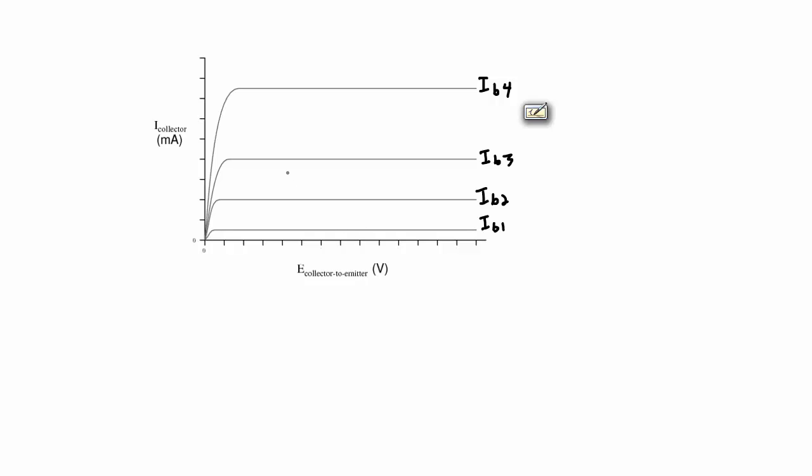Now where this comes into play in a class A amplifier is that a class A amplifier is an amplifier biased such that the operating point allows a full swing of the output for a full swing of the input.